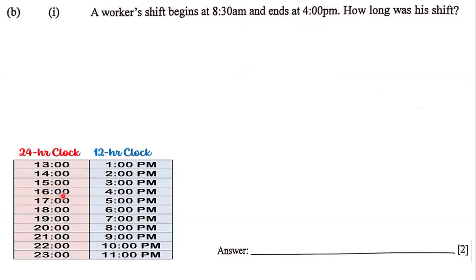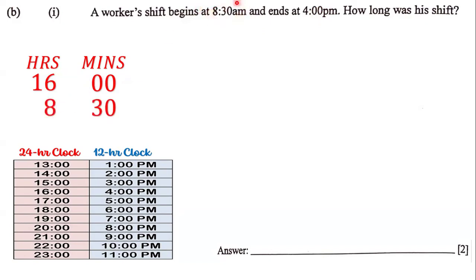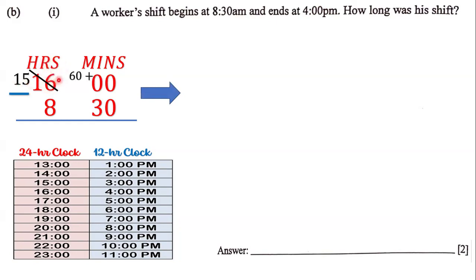This will help us when we're subtracting. So we're going to take the end time, which is 4 p.m. or 16 o'clock, and put that on top. So we have 16 hours and 0 minutes, and we're going to subtract the starting time, 8:30 — that's 8 hours and 30 minutes. Zero minus zero is zero, but zero minus three we can't do, so we borrow one hour from 16, leaving 15 hours, and bring 60 minutes over to the minute side.